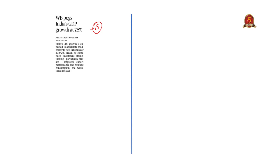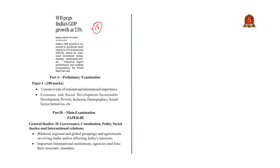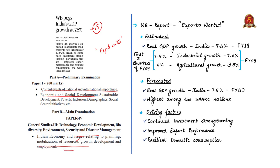The last article appears on page number 15 in both the editions. It is mainly important from prelims point of view under current events of national and international importance and economic and social development. For mains, it falls under global groupings involving India and important international institutions. The World Bank has published a report titled 'Exports Wanted'. The World Bank has estimated real GDP growth of India at 7.2% for the financial year 2019, which runs from 1st April 2018 to 31st March 2019.